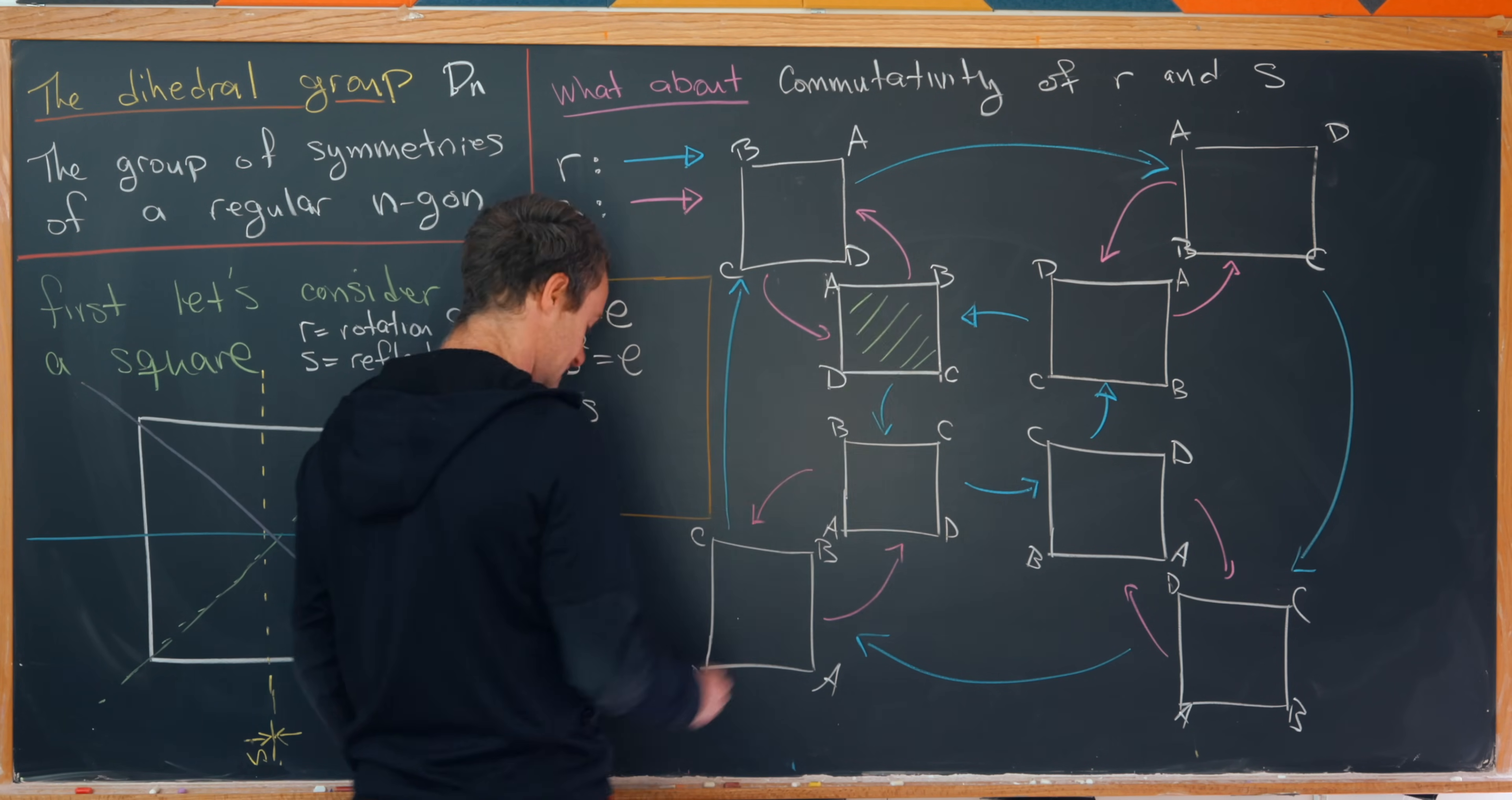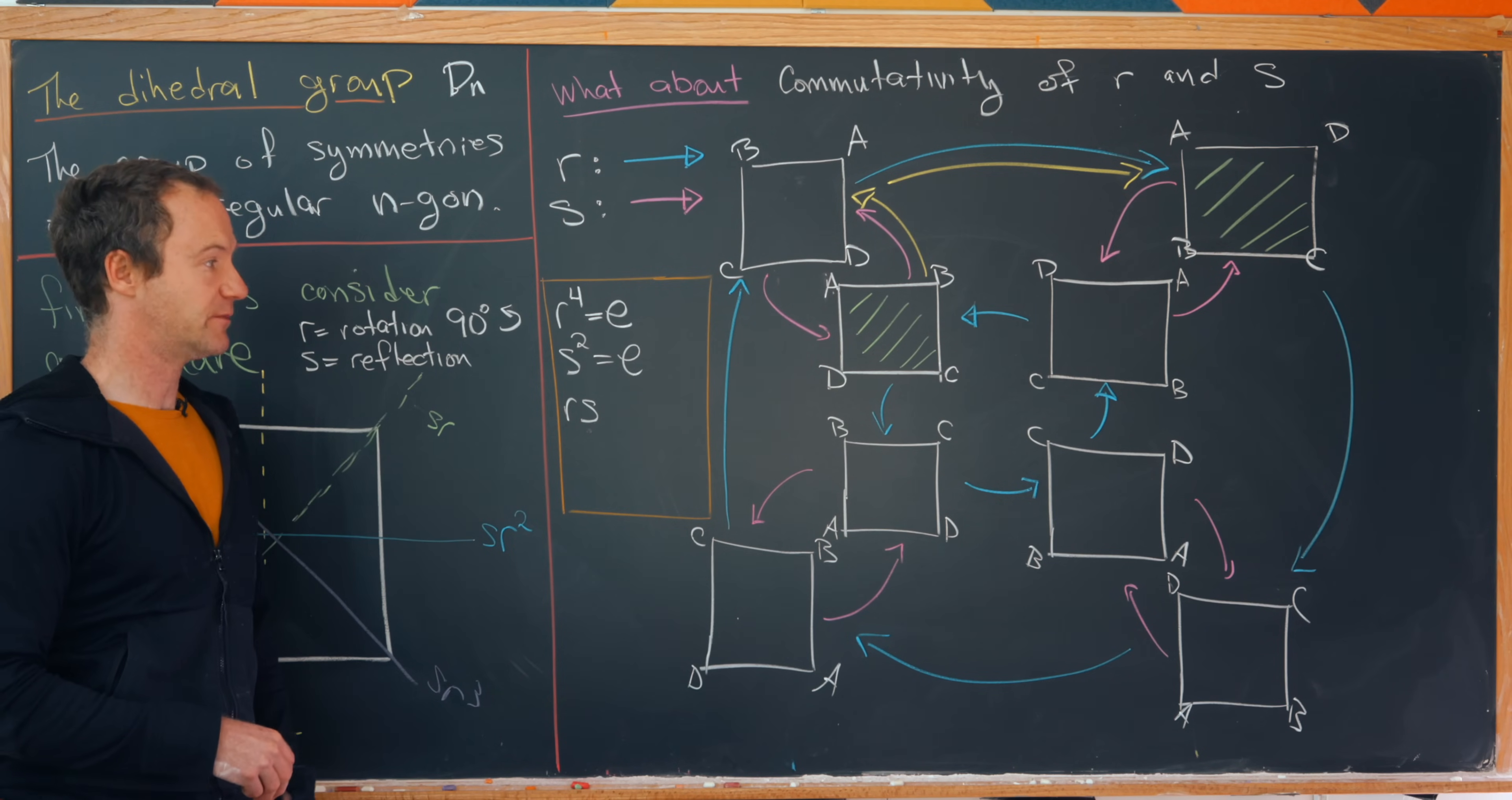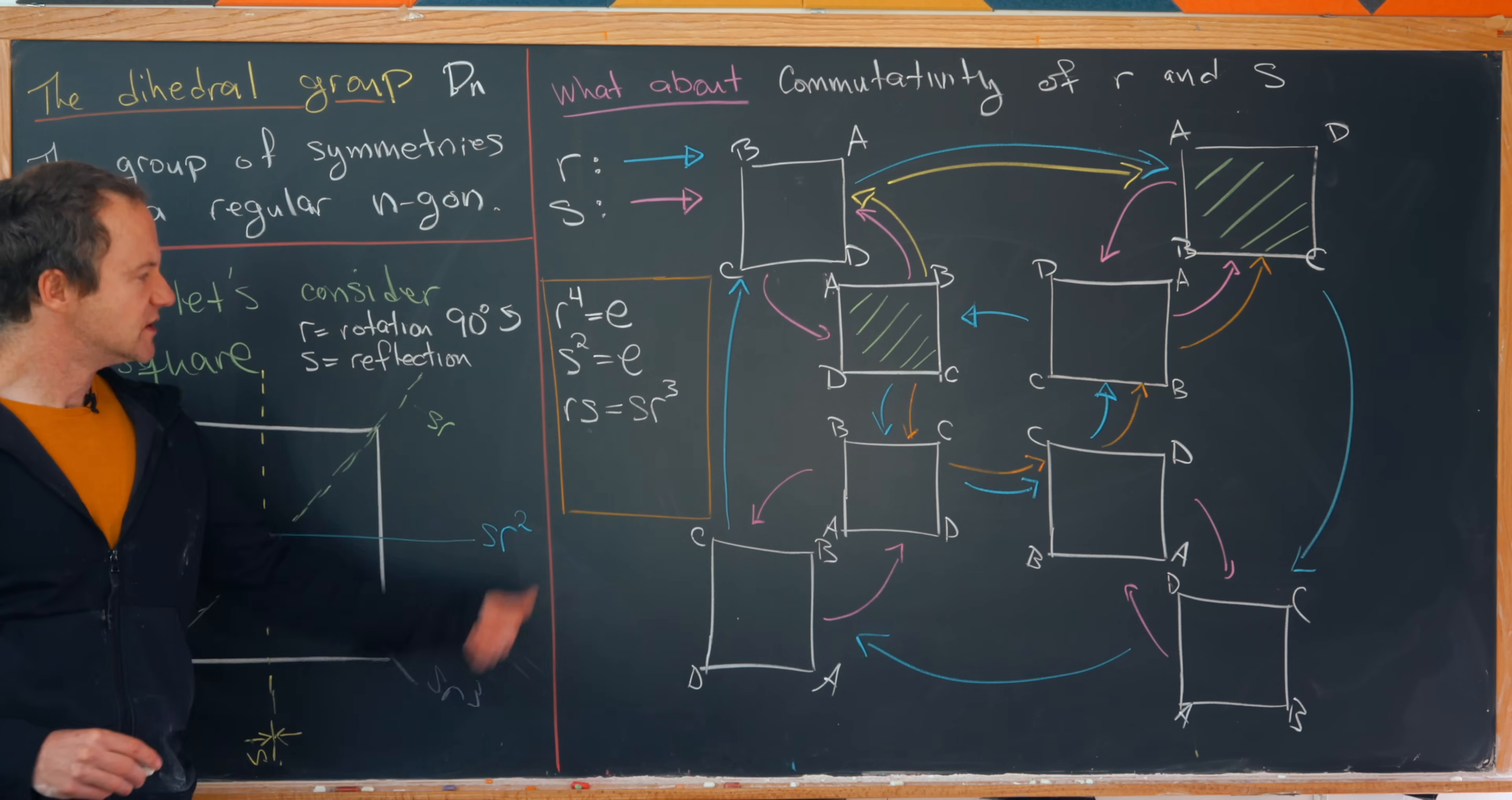So if we start here and we'll apply s first, so that will be applying this first, and then apply r second, we end up over here. So let's put this in green as well. But now let's find another path between these two squares. But I think I immediately see another path between these two squares. It's applying r, r, r, and then finally s. But applying r three times first and then s is encoded by sr cubed. So that gives us this relation r s equals sr cubed.